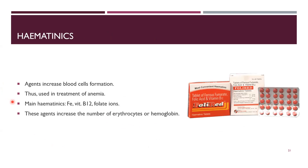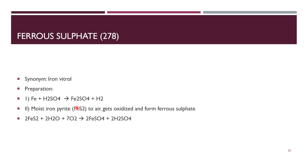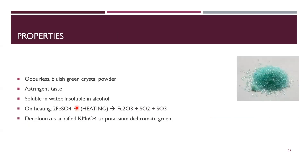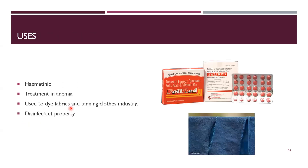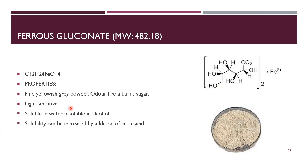Next is hematenics — these are agents that increase blood cell formation and can therefore be used in treatment of anemia. The main hematenics include iron, vitamin B12, folate, and related ions. These agents increase the number of erythrocytes and hemoglobin. Inorganic compounds covered under hematenics are ferrous sulfate, ferrous gluconate.